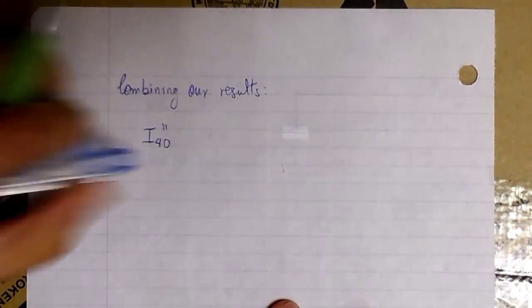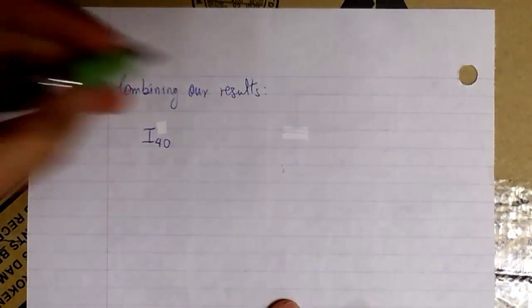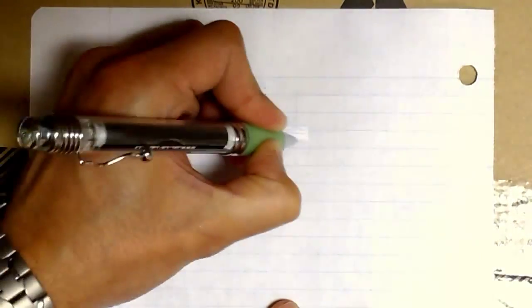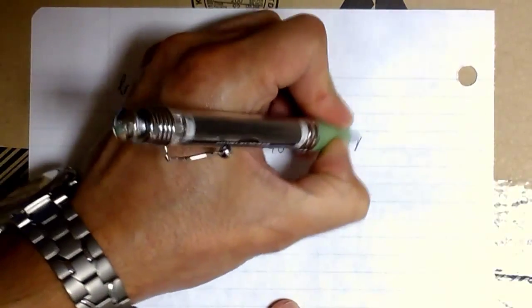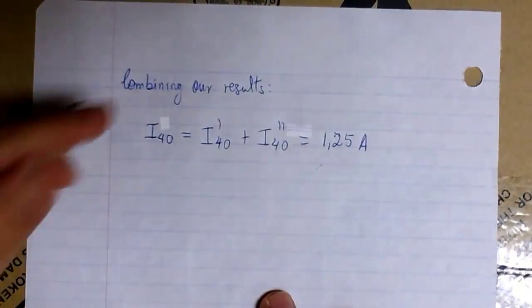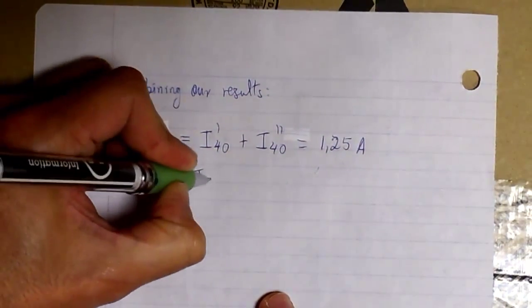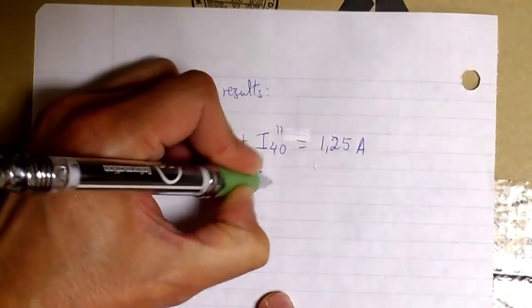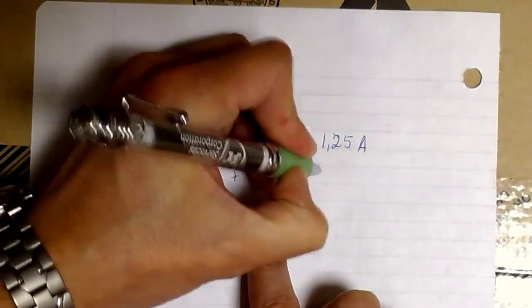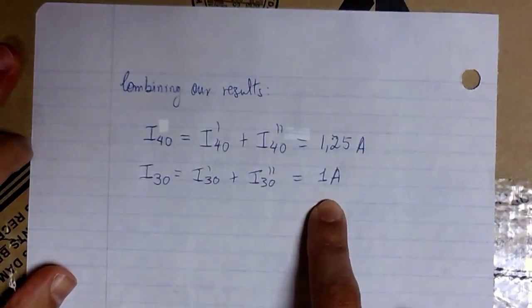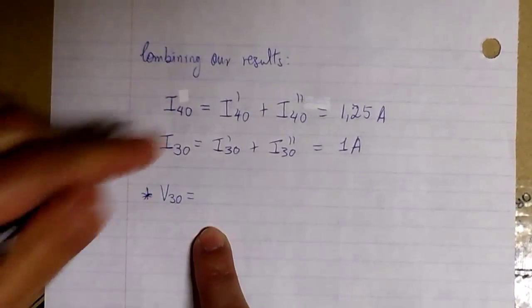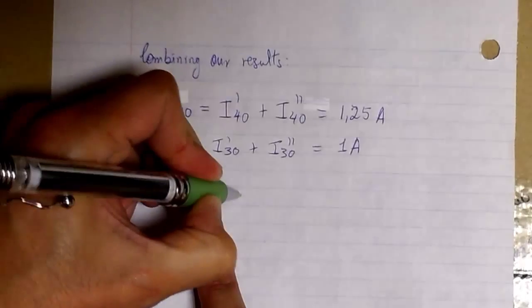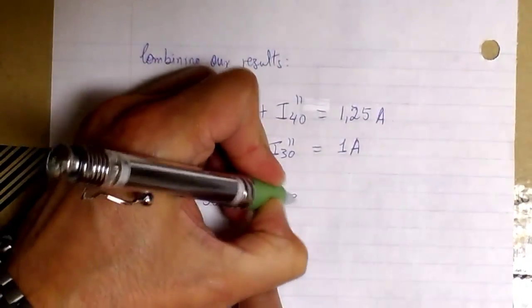Now the final step is to combine the results from every source. The real current flowing through 40 is the contribution of the 20 volt source plus the contribution of the 30 volt source — that is 0.5 + 0.75 = 1.25 amps. The real current flowing through 30 is the contribution of the 20 volt source plus the contribution of the 30 volt source — that is 0 + 1 = 1 amp. Those are the real currents in the circuit due to both sources.